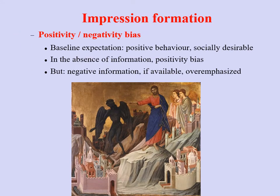Another bias is the positivity-negativity bias. In social life our baseline expectation is that people should behave positively, so in the absence of information our judgments tend to be positive — a positivity bias. However, when negative information becomes available, because negativity is undesirable and unusual, it has a disproportionately strong effect. So we have a positivity bias in the absence of information, but negativity tends to have a disproportionately great influence on impressions once information is available.